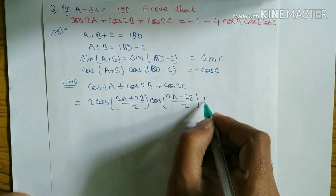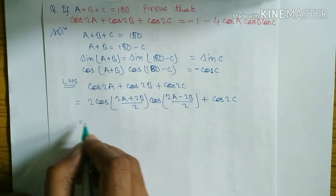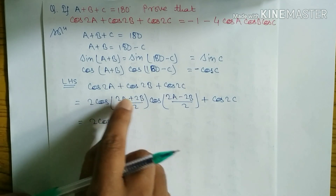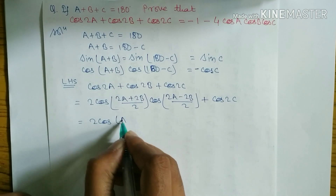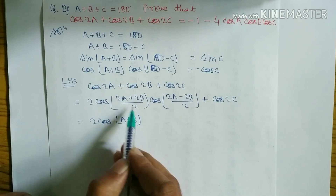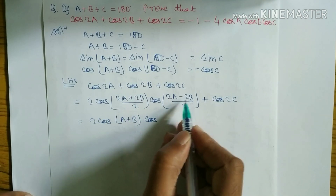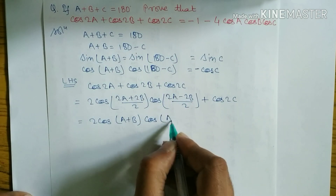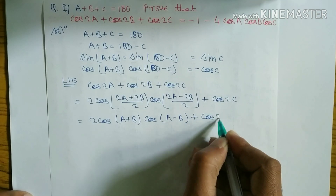Applying the sum-to-product formula to cos 2A plus cos 2B: this gives 2 cos((2A+2B)/2) cos((2A-2B)/2). The 2s cancel, leaving 2 cos(A+B) cos(A-B), plus cos 2C.